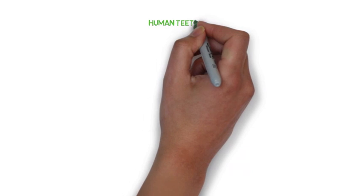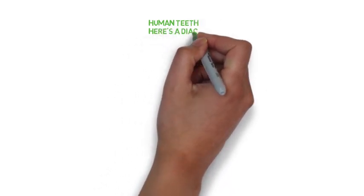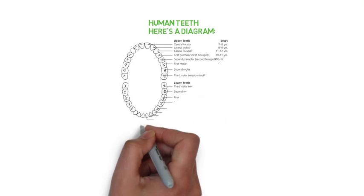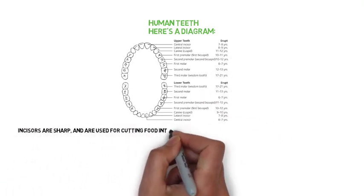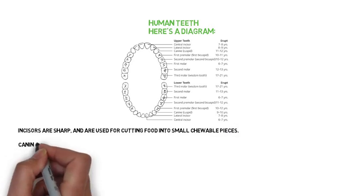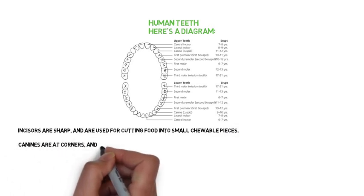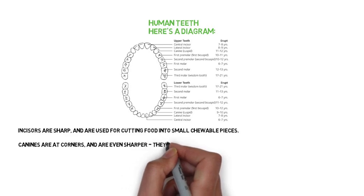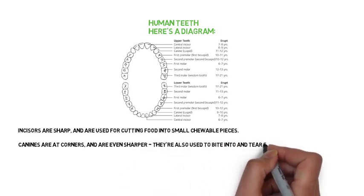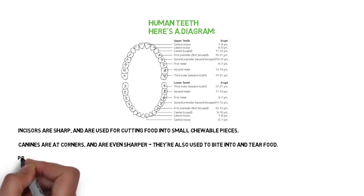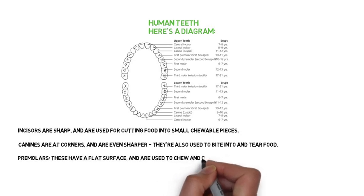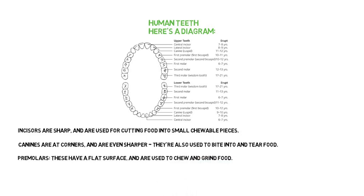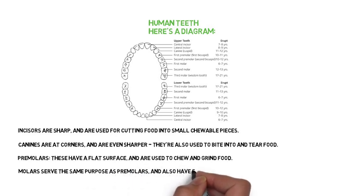Human teeth. Here is a diagram of the human mouth and the teeth within it. Incisors are sharp and are used for cutting food into small chewable pieces. Canines are at the corners and are even sharper; they are also used to bite into and tear food. Premolars have a flat surface and are used to chew and grind food. Molars serve the same purpose as premolars and also have flat surfaces.